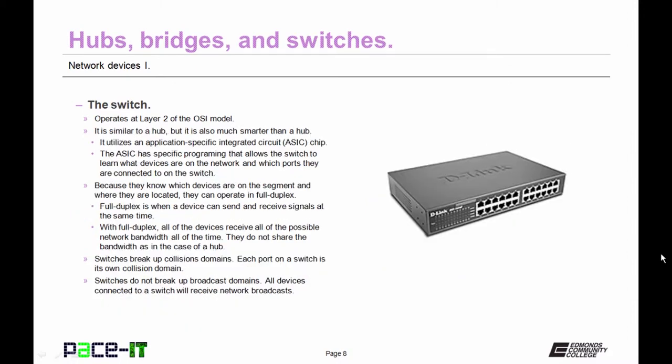Now let's move on to the switch. It also operates at layer 2 of the OSI model. It's similar to a hub, but it's also much smarter than a hub. It utilizes an application-specific integrated circuit, an ASIC chip. This ASIC chip has specific programming that allows the switch to learn what devices are on the network and which ports they are connected to. Because the switch knows which devices are on the segment and where they are located, they can operate in full duplex. Full duplex is when a device can send and receive signals at the same time. With full duplex, all of the devices receive all of the possible network bandwidth all of the time.